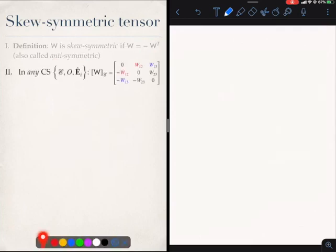Clearly, if a tensor is the negative of its transpose, the diagonal terms must be zero, no matter which coordinate system I choose to write the matrix of W. The other thing that you will notice is that the remaining non-zero terms are actually mirror images of each other, or negative mirror images.